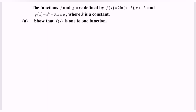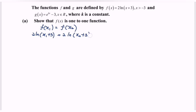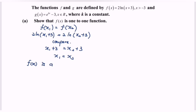Show that f(x) is a one-to-one function. We set f(x₁) = f(x₂), then substitute: 2ln(x₁+3) = 2ln(x₂+3). Comparing both sides gives x₁+3 = x₂+3, which simplifies to x₁ = x₂. Therefore, f(x) is a one-to-one function because x₁ equals x₂.